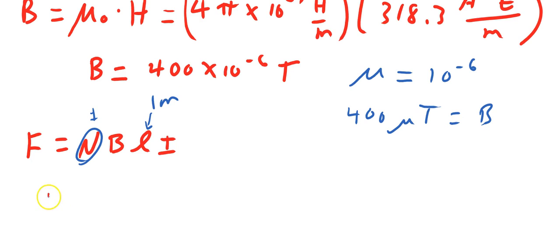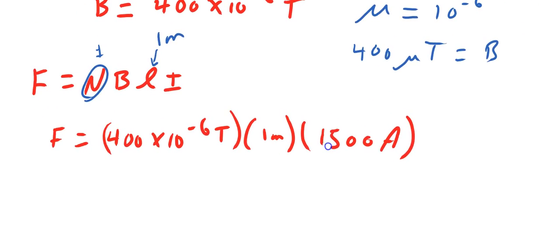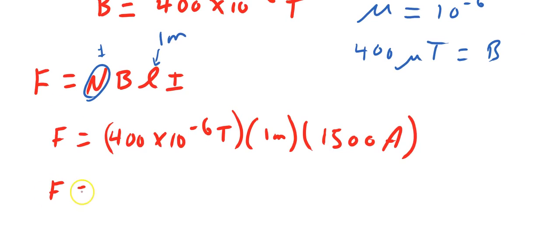So the force becomes the flux density, 400 times 10 to the negative 6 teslas, multiplied by 1 meter, multiplied by our current 1500 amps.